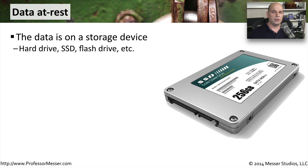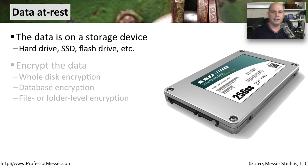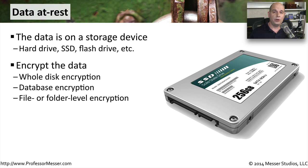Once we transfer the information across the network, we're probably going to store it somewhere. We refer to the stored data as data at rest. It's on a hard drive, it's on a SAN, it's on an SSD — it's on some device that's stored and waiting for us to retrieve it. Since the data is now being stored, it's probably a good idea to think about encrypting that data as a way to protect it.